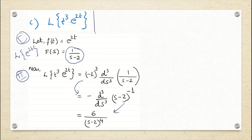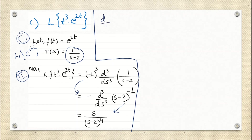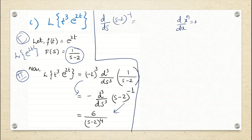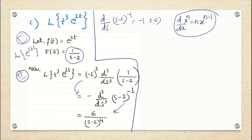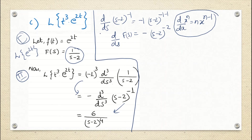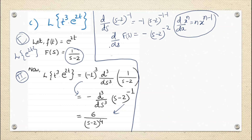Using the general formula d/dx of x^n = n·x^(n-1): d/ds of (s−2)^(−1) gives minus 1·(s−2)^(−2), which equals minus (s−2)^(−2). This is the first differentiation. Now we perform the second differentiation: d/ds of minus (s−2)^(−2). Taking the minus outside, d/ds of (s−2)^(−2) gives minus 2·(s−2)^(−3), so minus times minus gives plus 2·(s−2)^(−3).